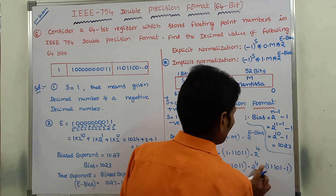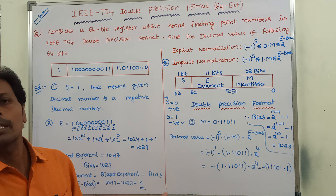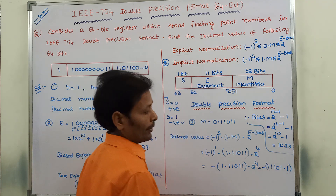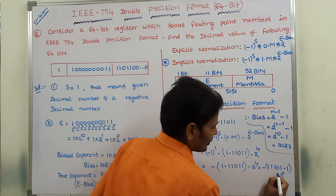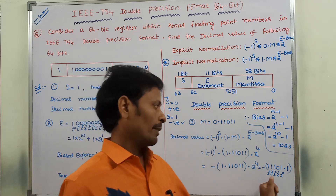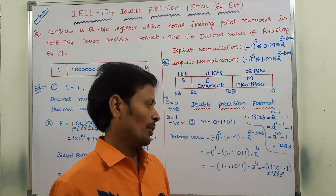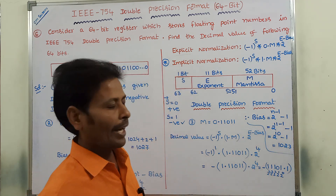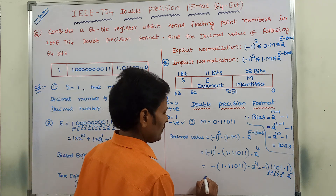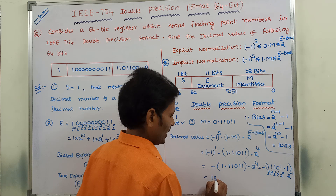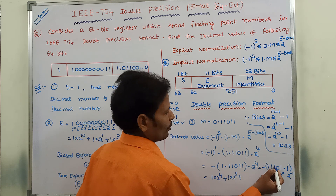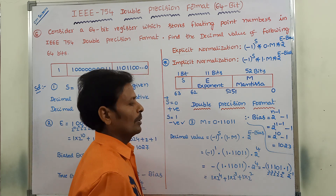Now, to find out the decimal equivalent, we apply positional weights. For the integer part, starting from LSB: 2^0, 2^1, 2^2, 2^3, 2^4. For the fractional part, starting from 2^(-1). So: 1×2^4 = 16, 1×2^3 = 8, 1×2^2 = 4, 0×2^1 = 0, 1×2^0 = 1, and 1×2^(-1) = 0.5.